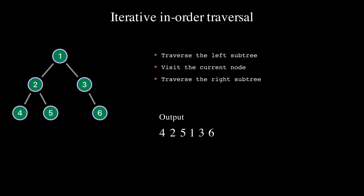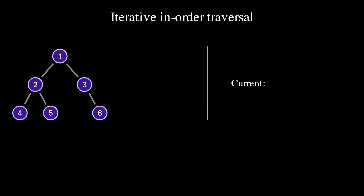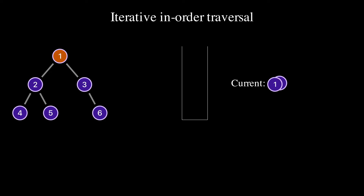In the recursive implementation we relied on the program stack. Since we will implement an iterative version, we have to track the traversal ourselves. To track the traversal we will use a stack and a reference to the node currently being processed. A stack is a data structure that follows the last-in first-out policy, meaning the last element added to the stack is the first to be removed. The current is a reference to a binary tree node that is being processed. We start traversing from the root node and set the current to the root of the binary tree. If the current is not null, we push the current node to the stack and set the current equal to the current's left node.